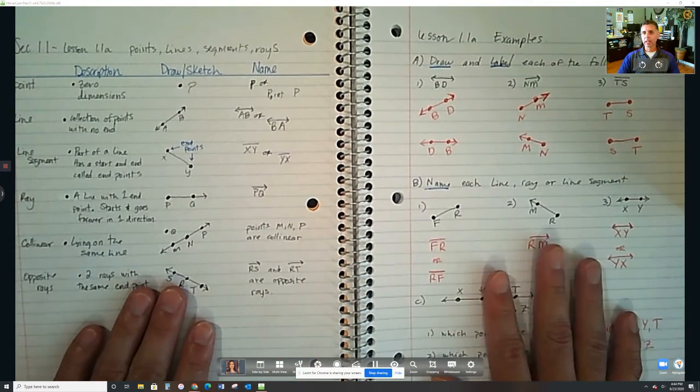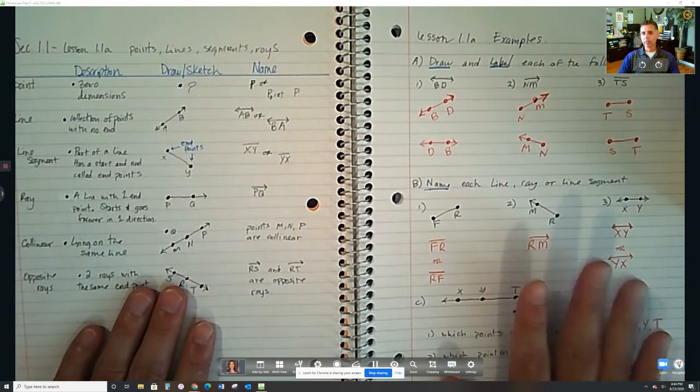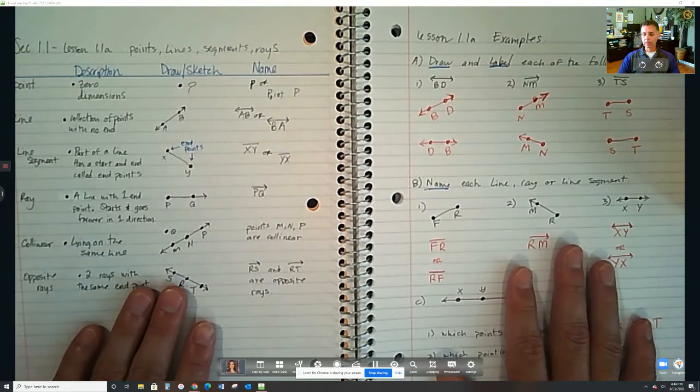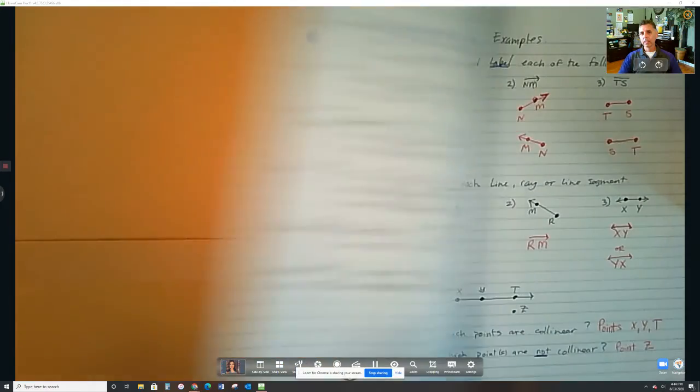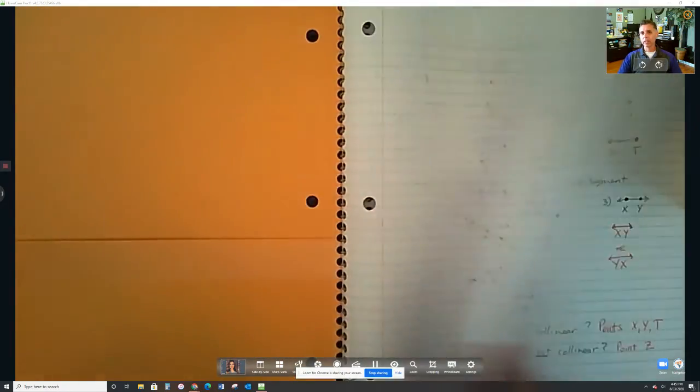In order to work out the examples that will be on the right-hand side. If we would have written it on the front page, then we'd be flipping back and forth trying to figure out what does collinear mean, how do I draw a line segment, how do I name a ray?